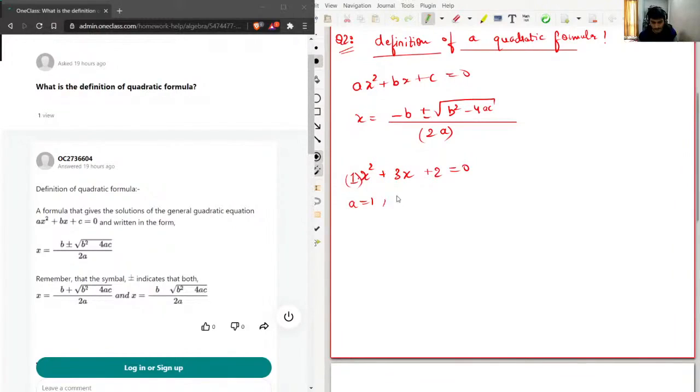And my b is 3 and c will be 2. Now I'll use this formula so I can write like this: minus b, that means minus 3, plus minus square root, then b square will be 3 square minus...